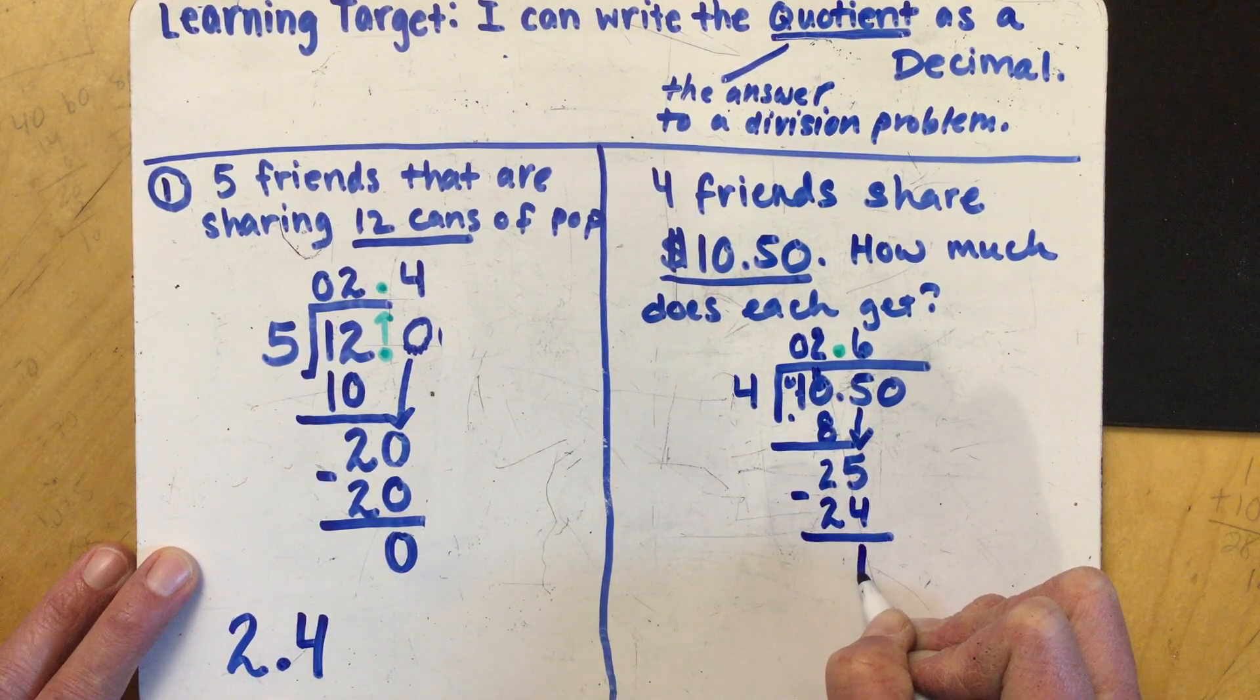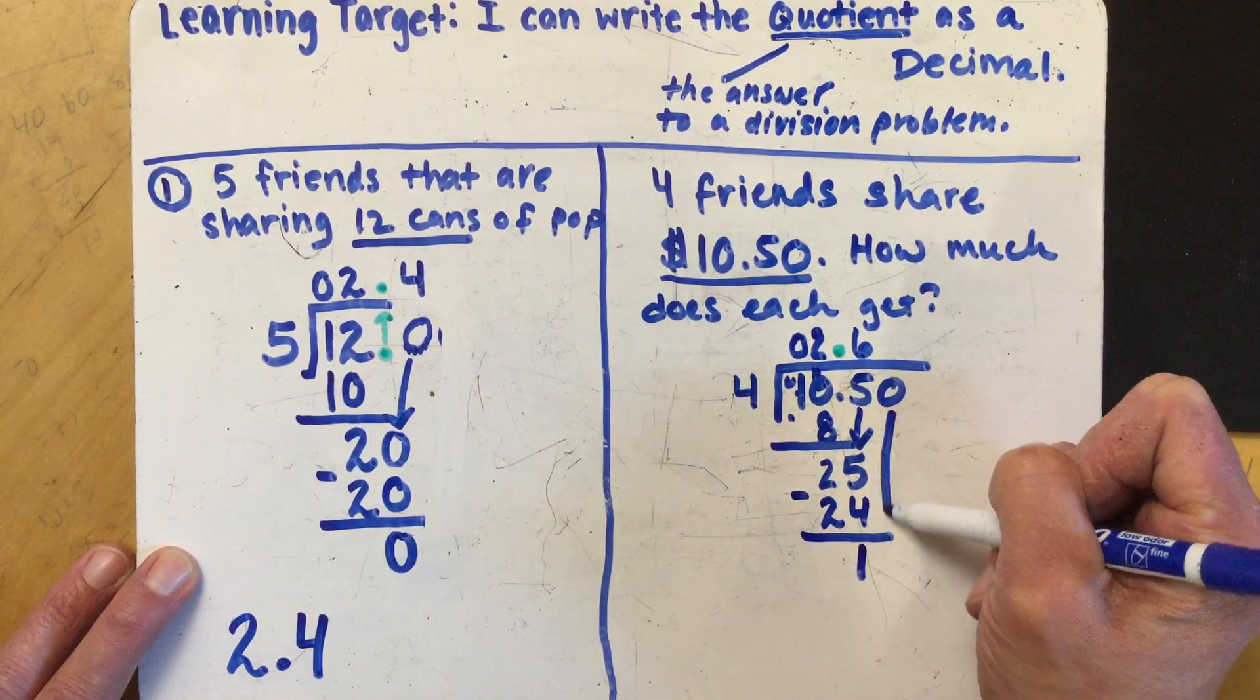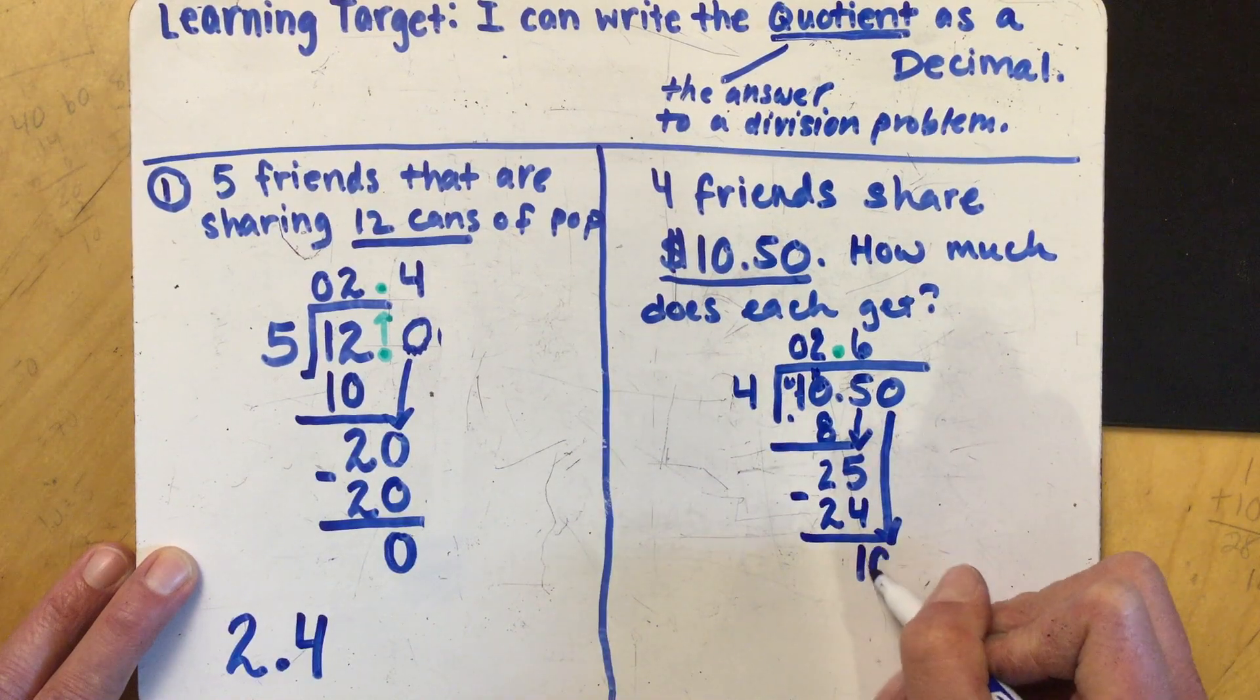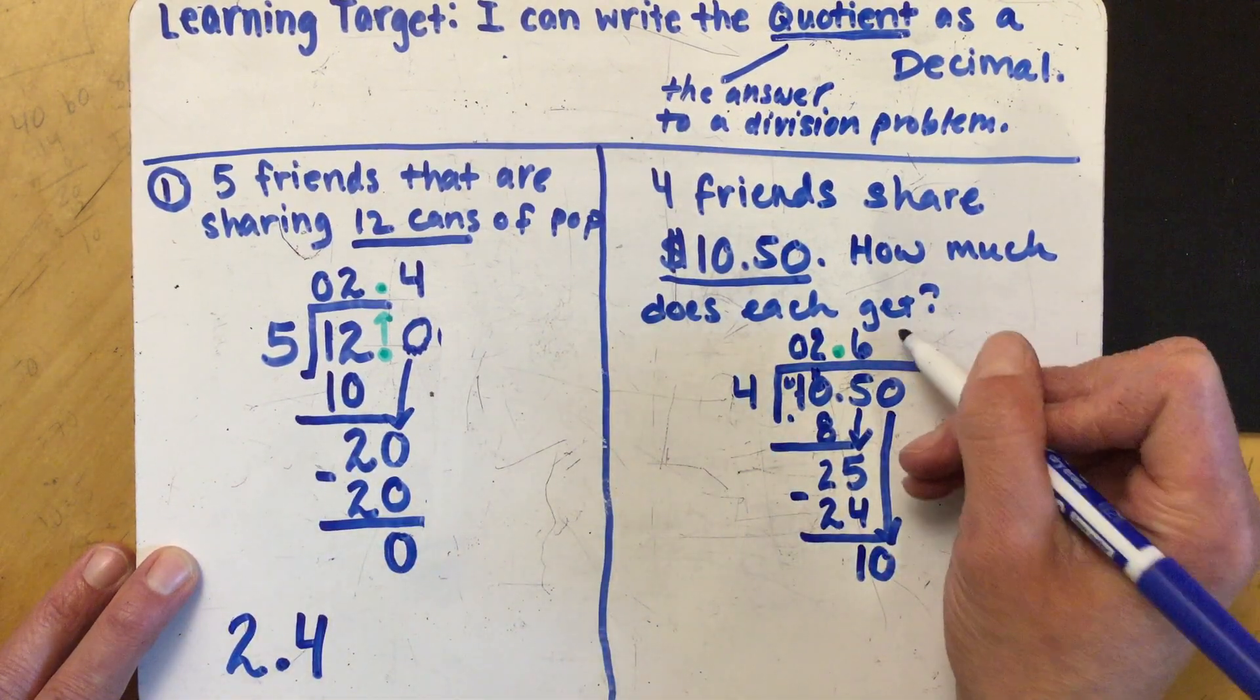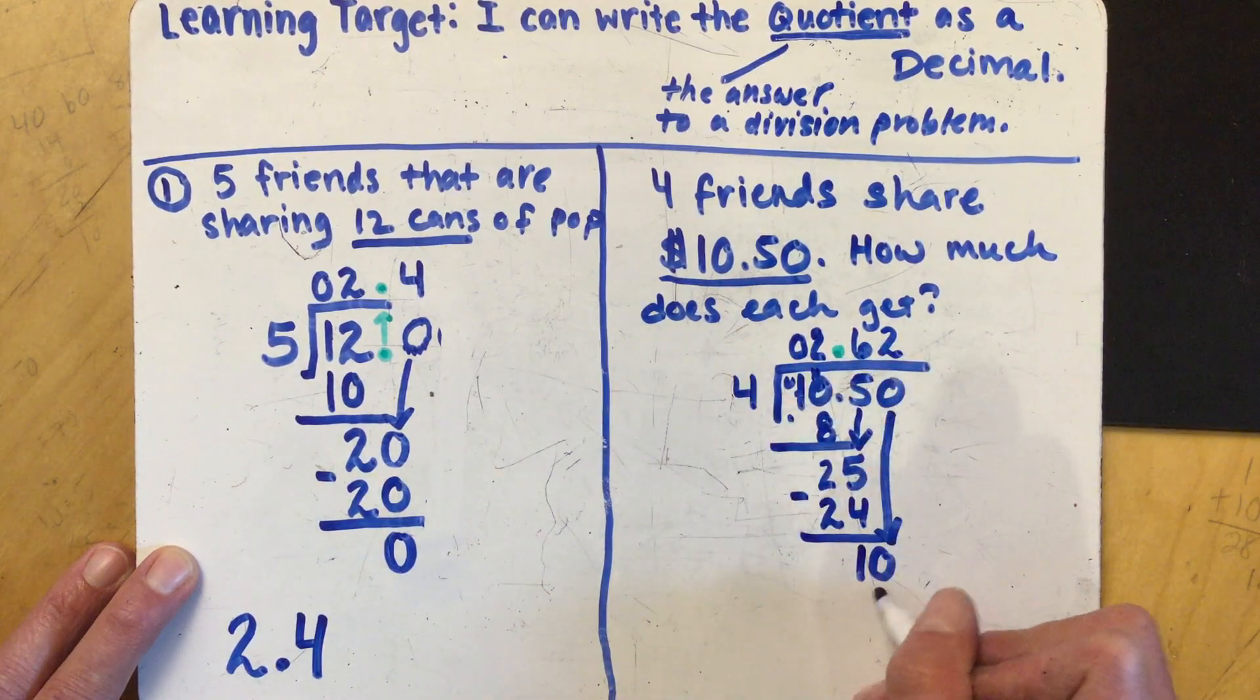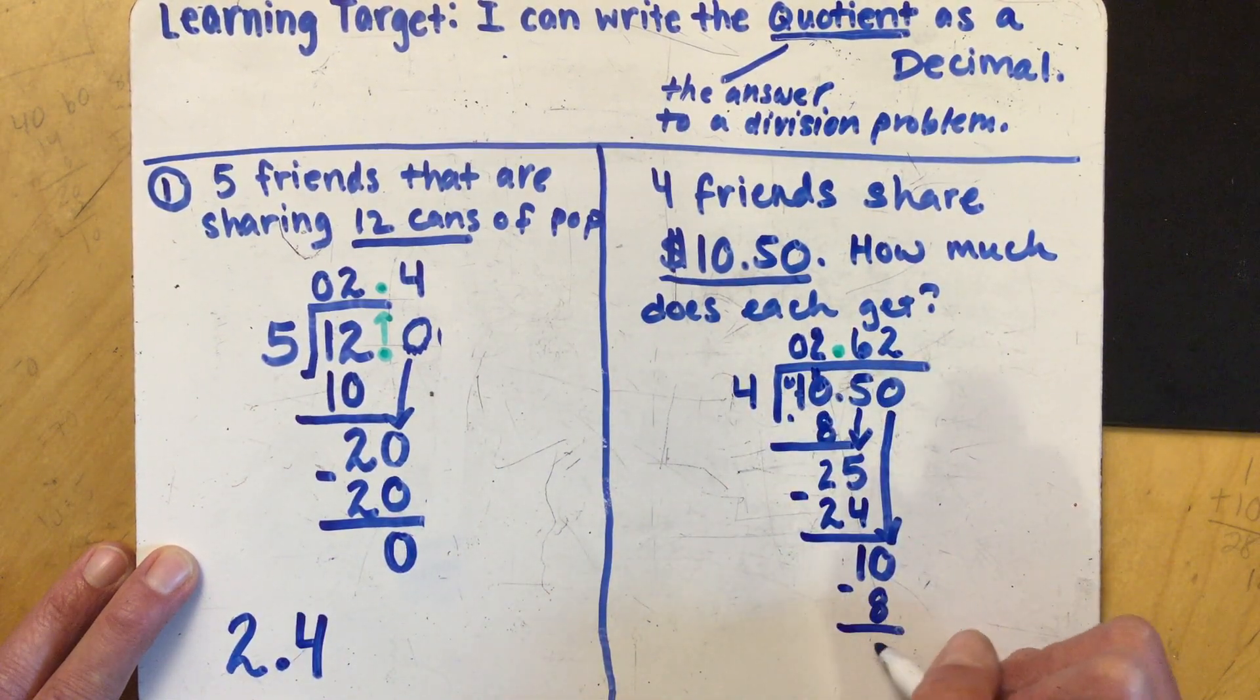I have a remainder. So I'm gonna bring my next number down. Four goes into ten two times. Remainder of two.